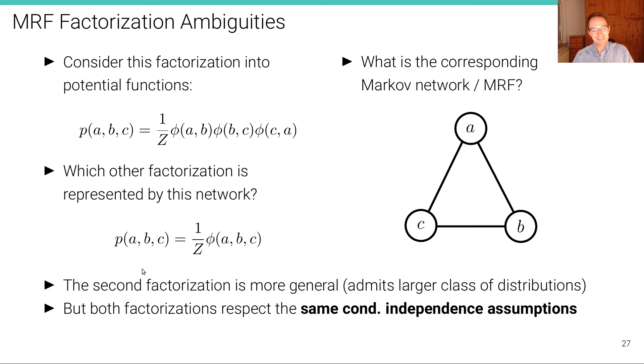Now, the second factorization is more general as it admits a larger class of distributions. By having this triplet potential here, we can model all possible functions of A, B and C, which is not possible by looking just at this product of pairwise relationships or pairwise functions or functions of two variables. So this is richer than this. But in terms of Markov networks, they don't differ because they respect, both of them respect the same conditional independence assumptions, despite this one being more powerful.